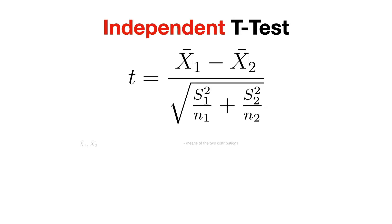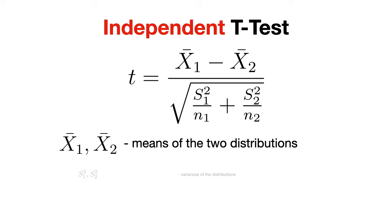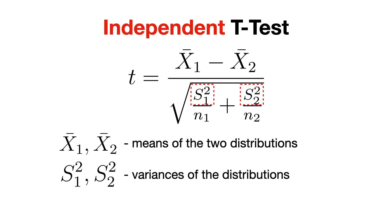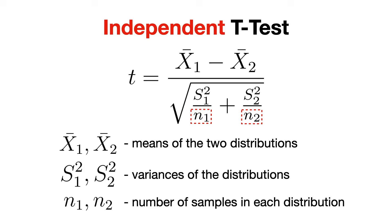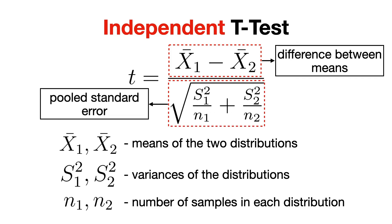Here, x1 and x2 are the means of the two groups, s1 squared and s2 squared are their variances, and n1 and n2 are the sample sizes. Basically, what this formula calculates is the difference between the group means in the numerator to see if there is a significant difference between the two, and the pooled standard error in the denominator, which comes from the variability of both groups.